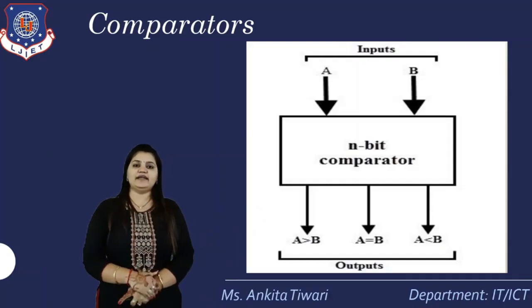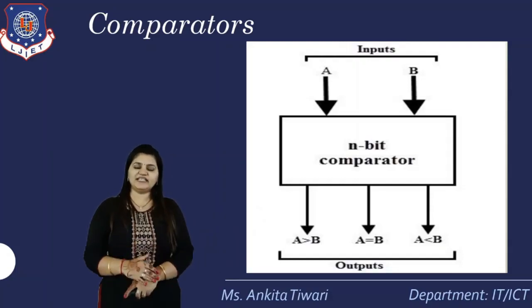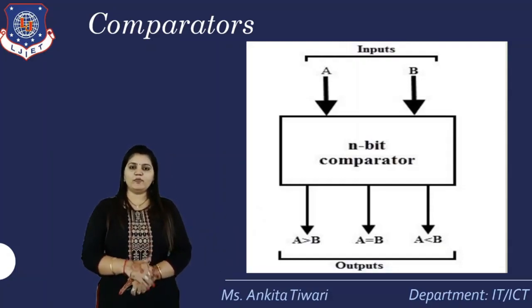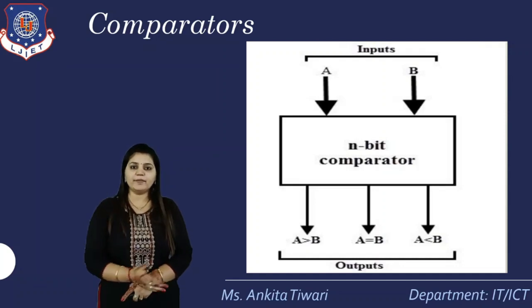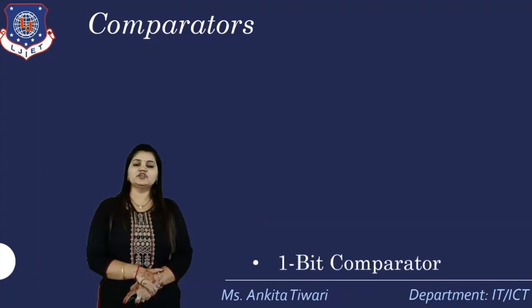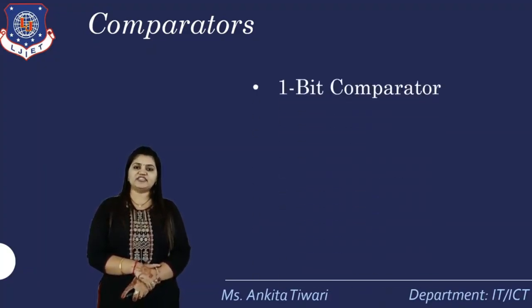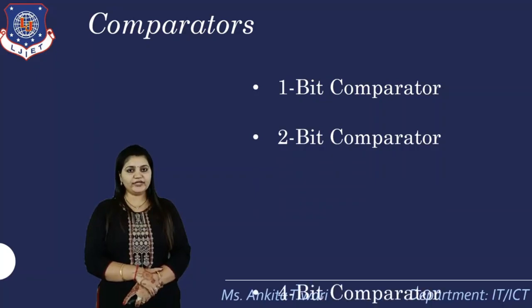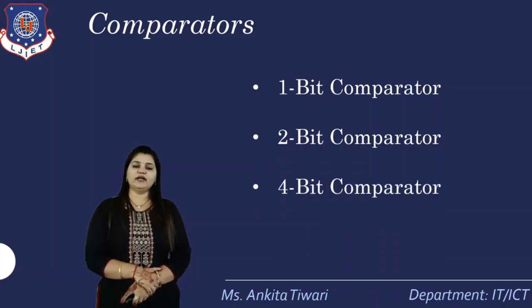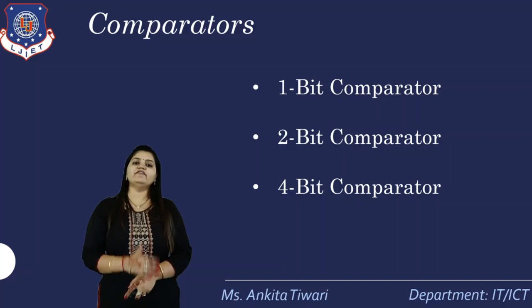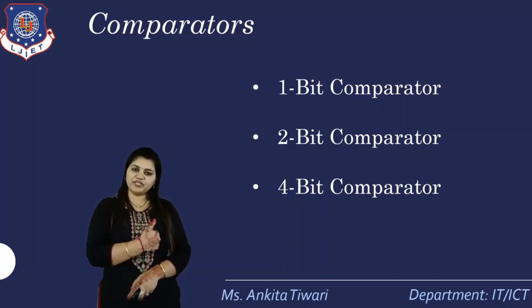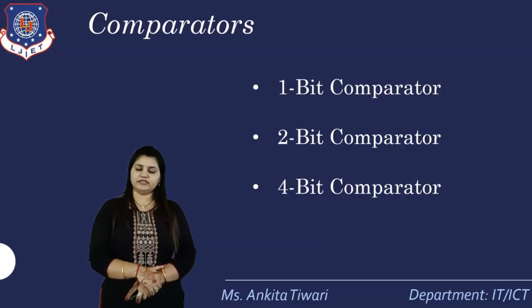In order to understand the logic circuit diagram of bit comparison, we will look at examples. Comparators are of three basic types: one-bit comparator, two-bit comparator, and four-bit comparator. There are other bit comparators as well, but we are covering the basic concepts using these three types.